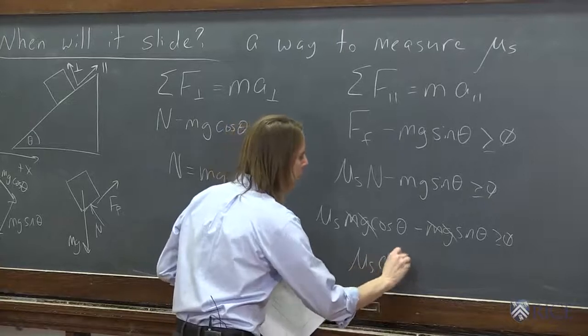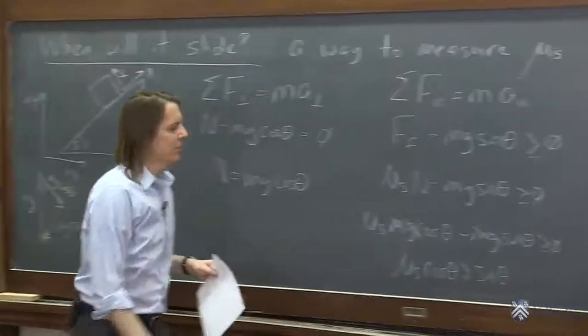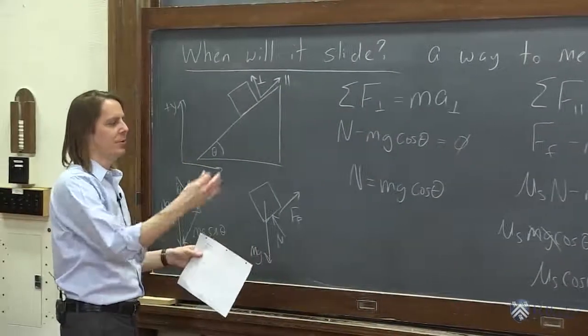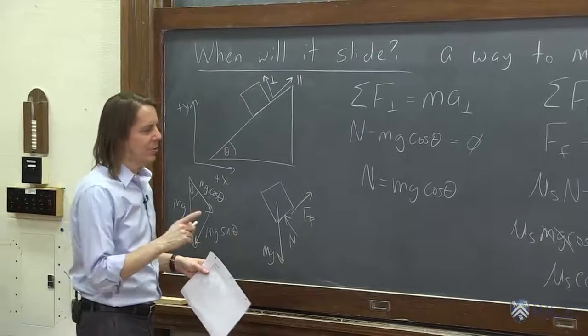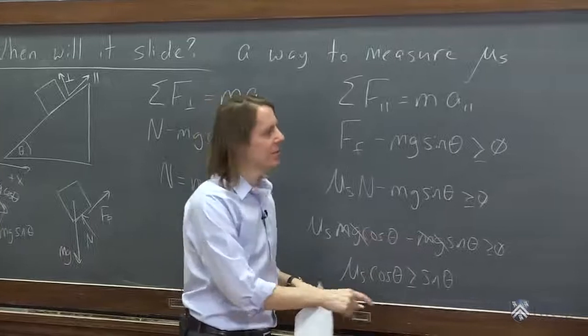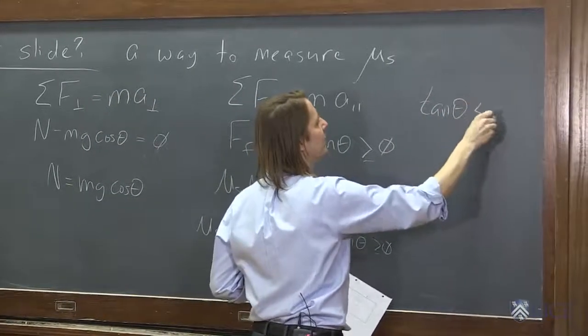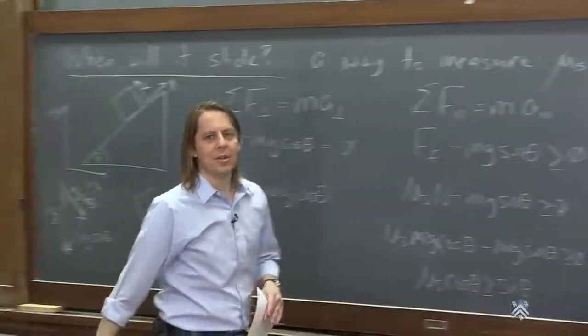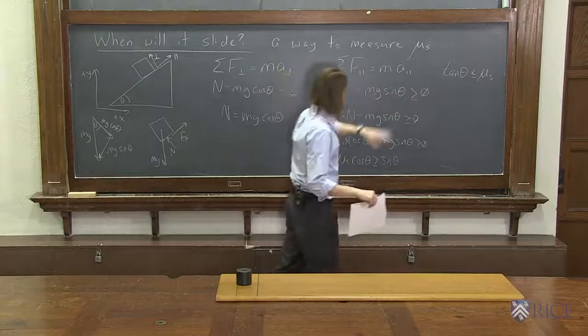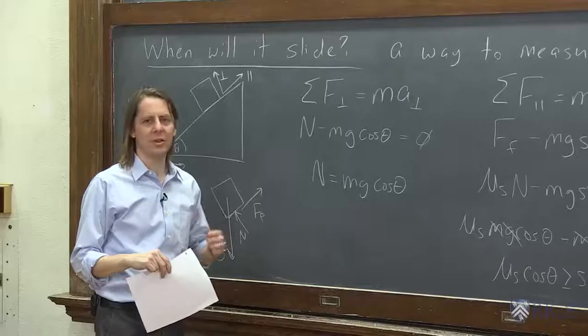and we're left with mu s cosine theta must be greater than sine theta. Mu s cosine theta must be greater than or equal to sine theta. That's right when it will happen. As soon as we cross, we become greater than that. There's another way to write that, is to bring the sine on the other side, sine over cosine is tangent, right? So as long as the tangent of theta is less than or equal to mu s, it won't slide, right? This is the point where it will begin to slide. So we are saying that we've got to keep tangent theta below mu s, and that's the critical point.